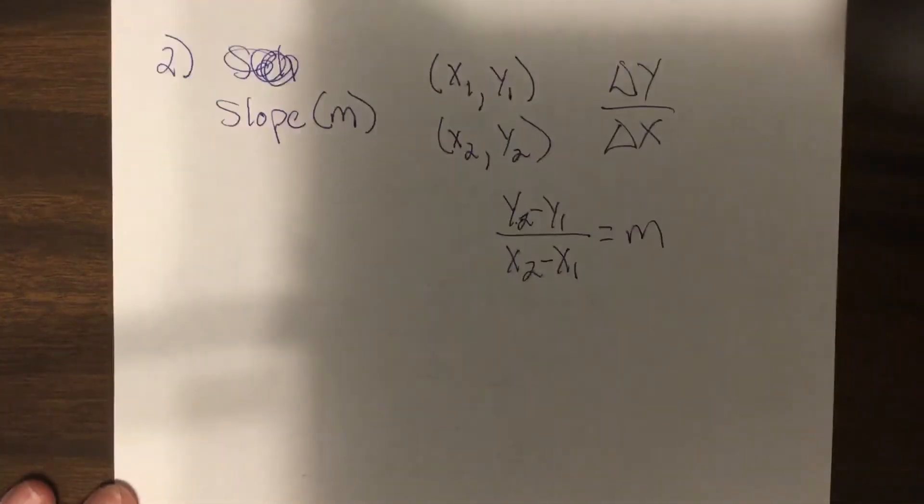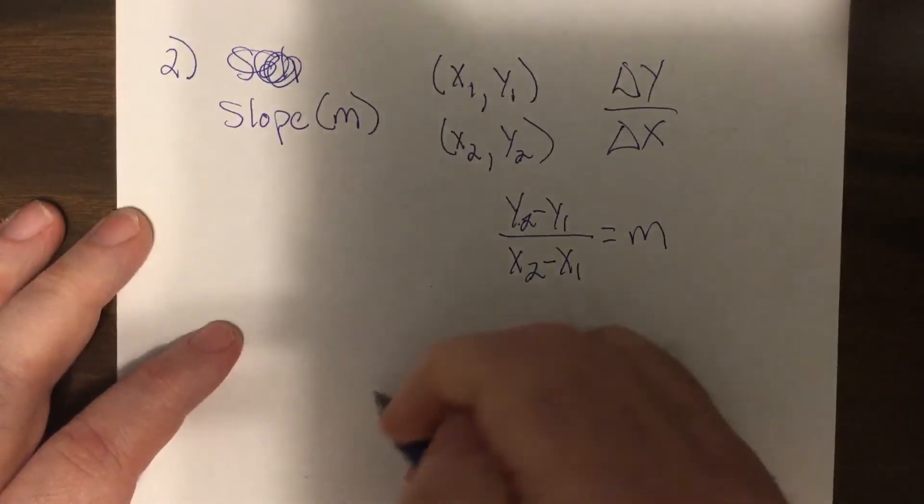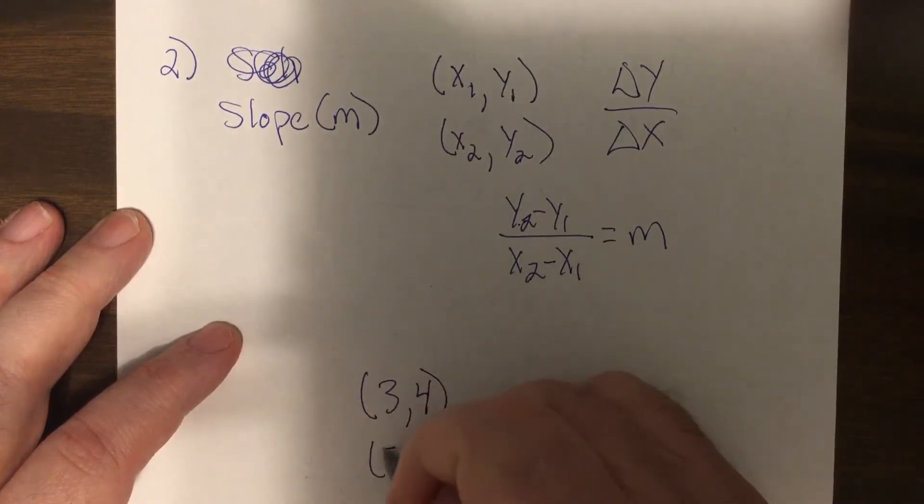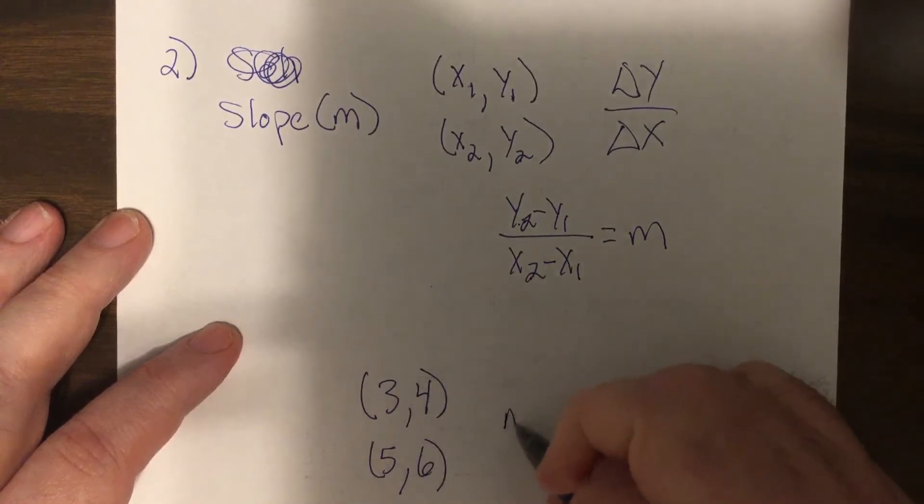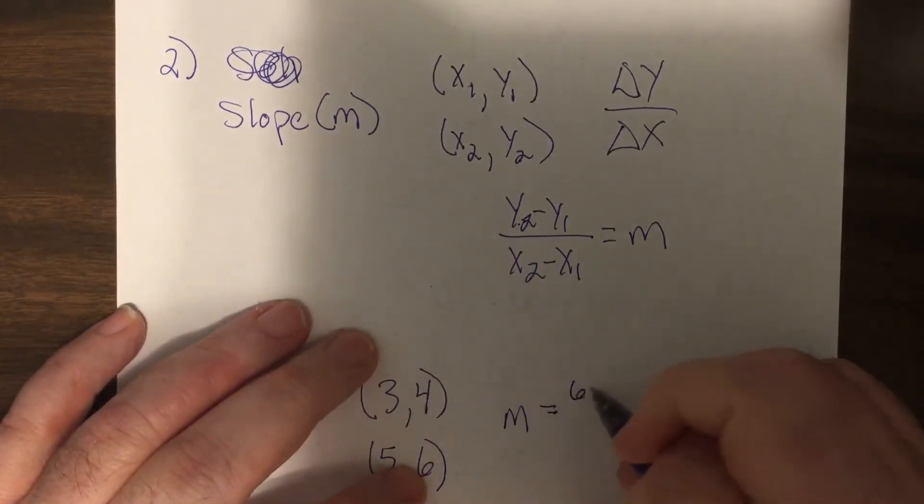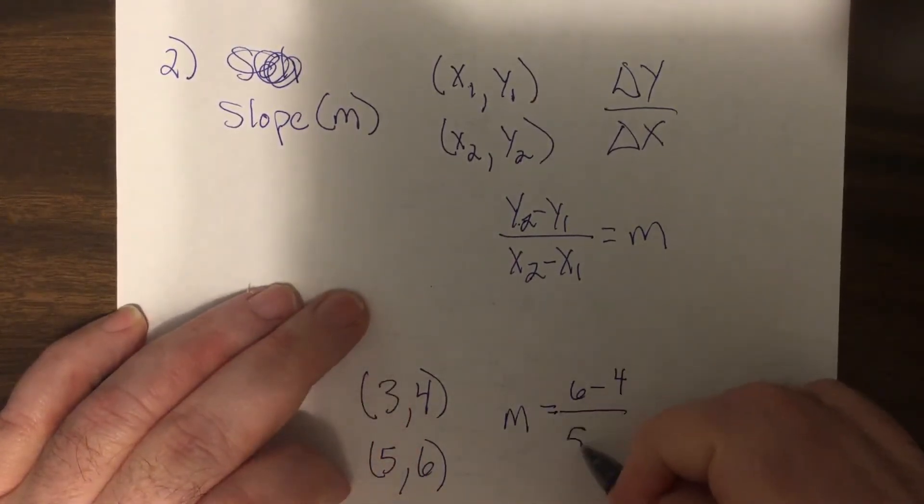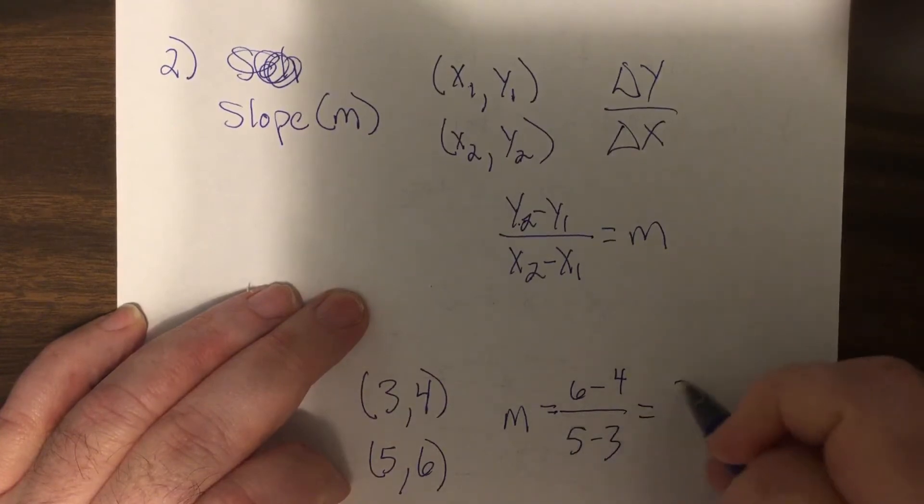Again, I'm not going to do a lot of examples of this. You should know. For points (3,4) and (5,6), slope is 6 minus 4 over 5 minus 3, which is 2 over 2, which is 1.